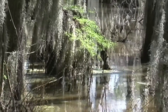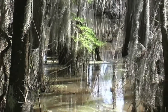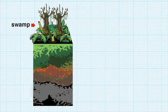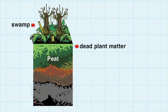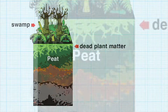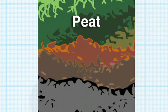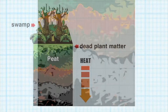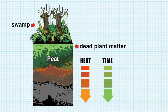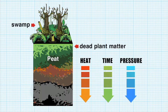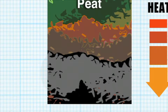Coal was formed from dead plant matter that fell into swampy water. It formed a thick layer of decomposing plant material called peat. To become coal, the peat must be buried by sediment. The continued burial and combination of heat, time, and pressure caused the complex hydrocarbon compounds in the peat to break down and change. Coal goes through different phases of carbonization over millions of years and can be found at all stages of development in different parts of the world.